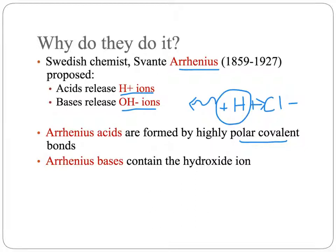So hydrogen chloride, or hydrochloric acid, releases those hydrogen ions when in aqueous solution in water. Arrhenius bases have to contain the hydroxide ion to meet the definition, because the definition is that they release hydroxide ions. So we have things like sodium hydroxide, which is lye, or potassium hydroxide. All of your metal hydroxides are Arrhenius bases.